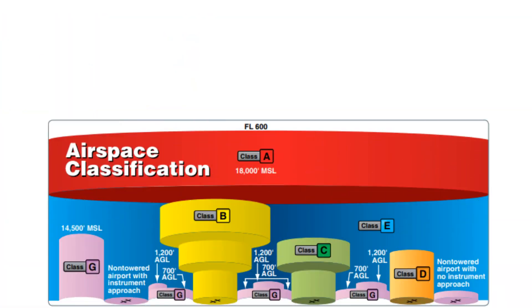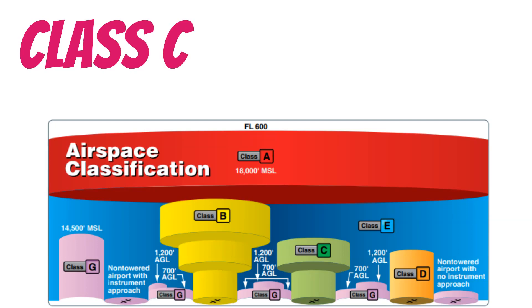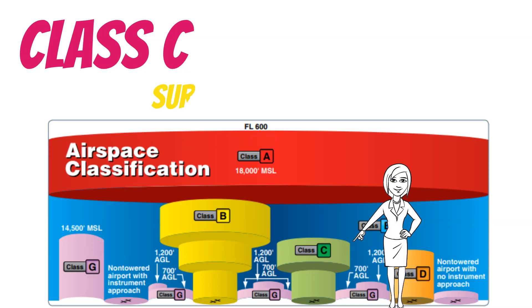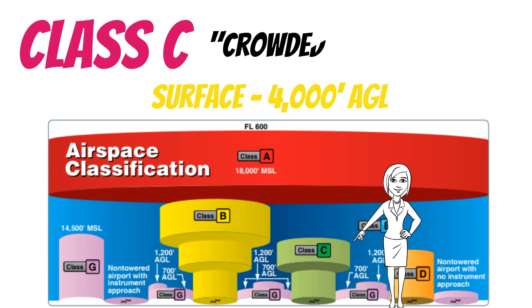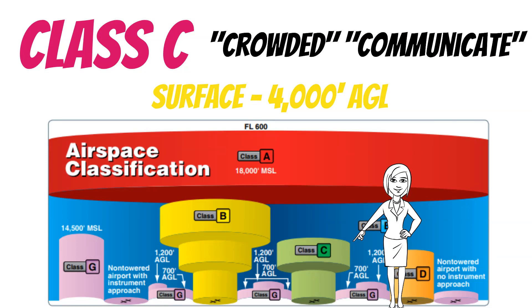Class Charlie airspace is crowded but not as busy as Class Bravo. It's also shaped like an upside-down wedding cake, though it is smaller — that upper level is typically only 10 miles in diameter. This airspace starts at the surface and goes up to 4,000 feet AGL. Remember, C is for crowded, and we also have to communicate with ATC before we can go in here.